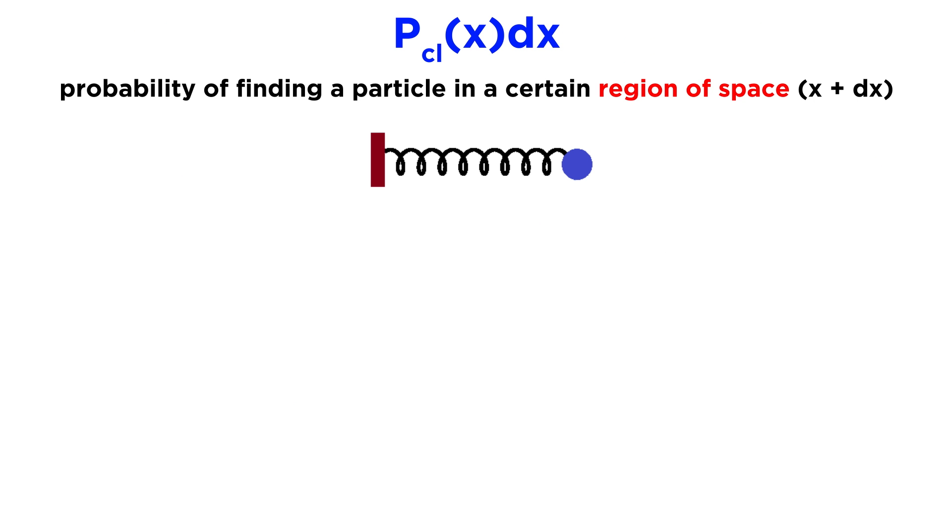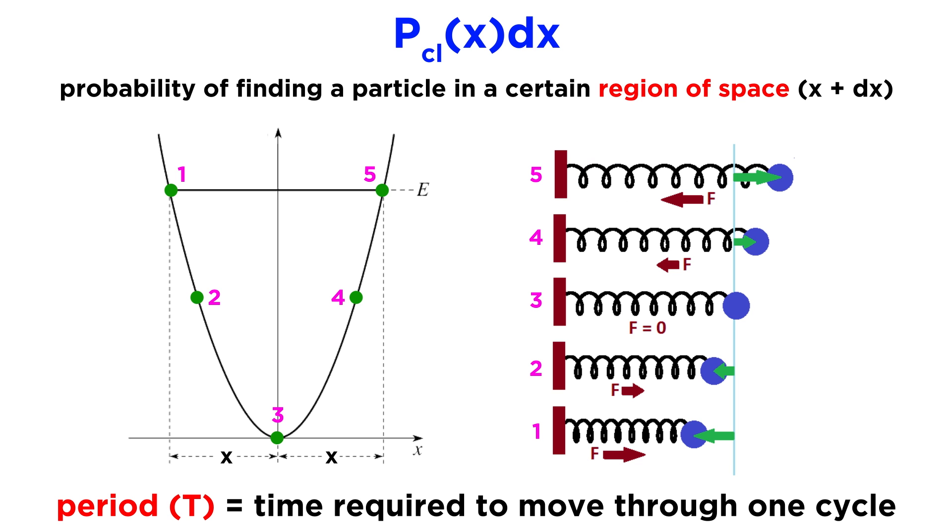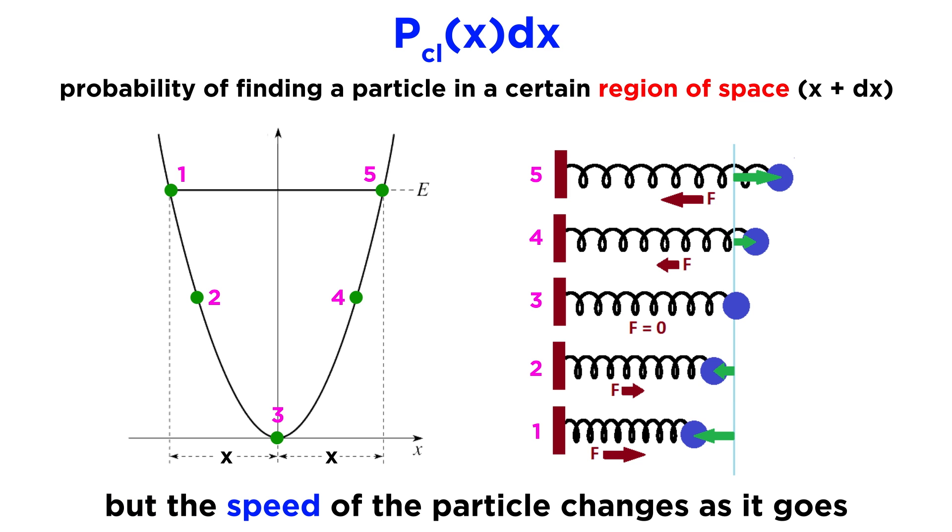We will define PCl of x dx as the probability of finding a particle in a certain region of space, for instance x plus dx. This quantity corresponds to the fraction of time that the particle takes to travel from x to x plus dx. To put it another way, we know that a period, T, is the time it takes for a particle to travel between turning points, so this applies to any periodic or cyclical phenomenon. With the harmonic oscillator, a classical particle that begins with a certain kinetic energy, E, will bounce in the harmonic trap from one side of the harmonic potential to the other, indefinitely. So it will move between negative x and x, always in the same amount of time, or with the same period.